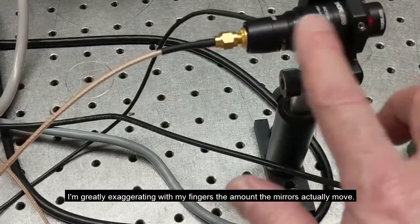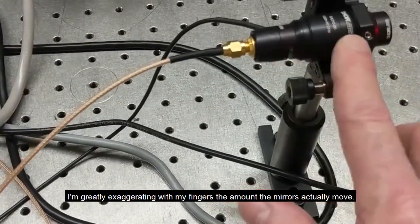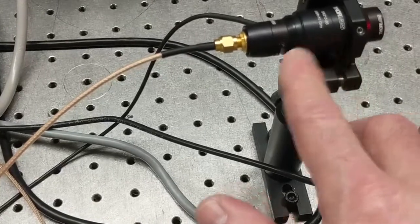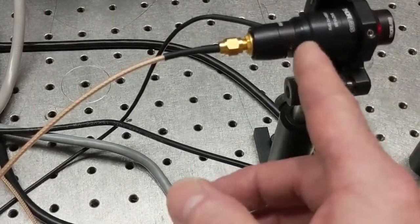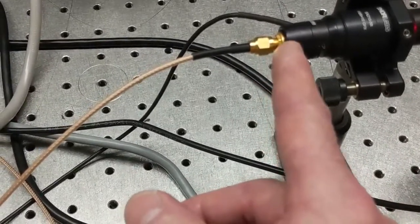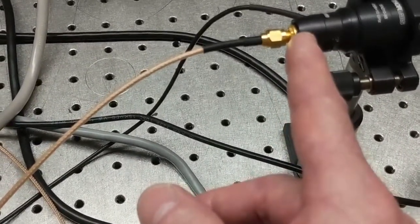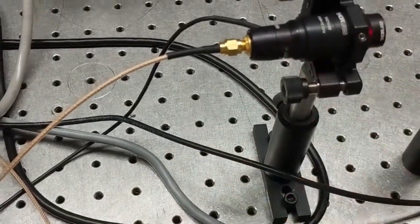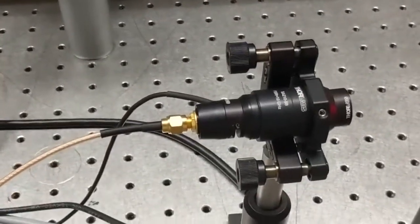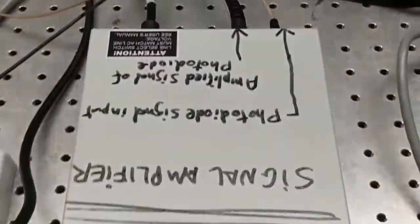And so as the distance between the mirrors is changing, the condition for constructive interference inside the Fabry-Perot is changing to different wavelengths. And so when, and there's a photodiode at the back here, which is measuring the intensity of the light that gets through this. So only the constructively interfered light gets through, registers on the photodiode and comes into this unit.